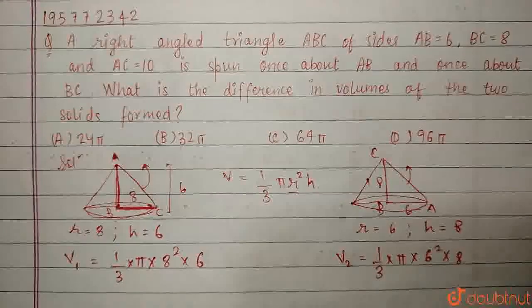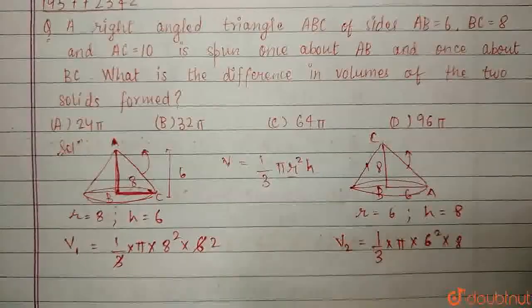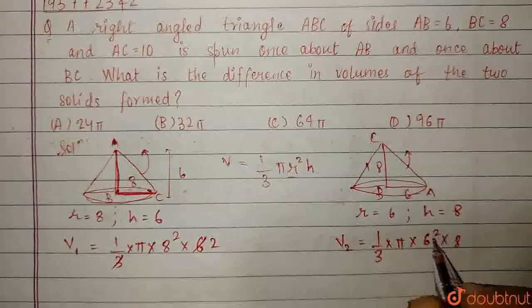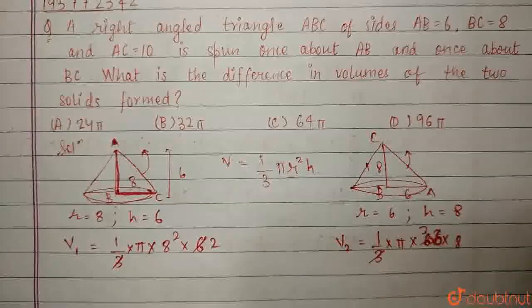3 can get cancelled here, 3, 2s are 6, and here also, 6 into 6. I can write 6 square as 6 into 6, 3 2s are 6.